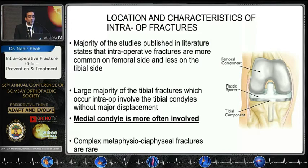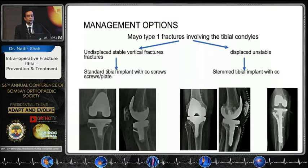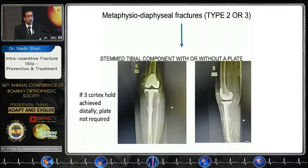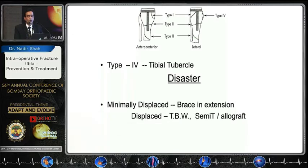Regarding management options: Type 1 fractures involve the tibial condyles — undisplaced, stable vertical fractures can be managed with a cancellous screw or plate, whereas displaced, unstable fractures require a stemmed tibial implant with cancellous screws. Types 2 and 3 require a stem on the tibial component with or without a plate; if three-quarters of the cortices are adequately held, no plate is required. Here is an example where a plate was augmented with an intermediary long stem.